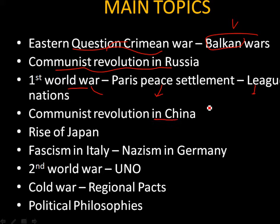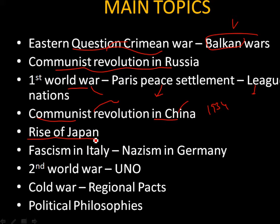In the Communist Revolution in China, we are going to deal with the Long March of 1934, the Civil War in China, the victory of the communists, the failure of the nationalists, and finally the results of the revolution. Coming to the rise of Japan, we have to mainly focus on how a small Asian country like Japan, by doing some reforms, became a great power in the world by 1919.